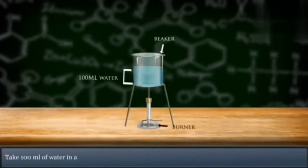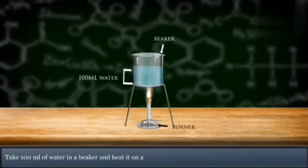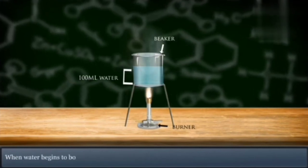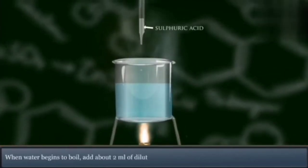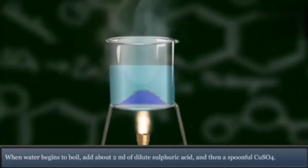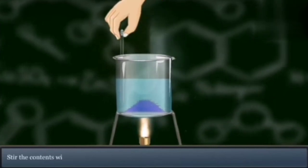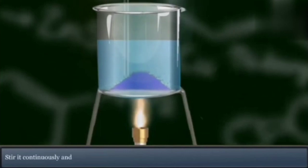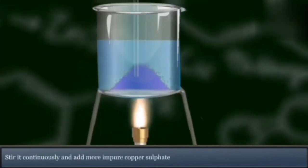Here is an experiment to see how crystallization occurs. Take 100 ml of water in a beaker and heat it on a Bunsen burner. When water begins to boil, add about 2 ml of dilute sulfuric acid and then a spoonful of copper sulfate. Stir continuously and add more impure copper sulfate until no more of it dissolves.